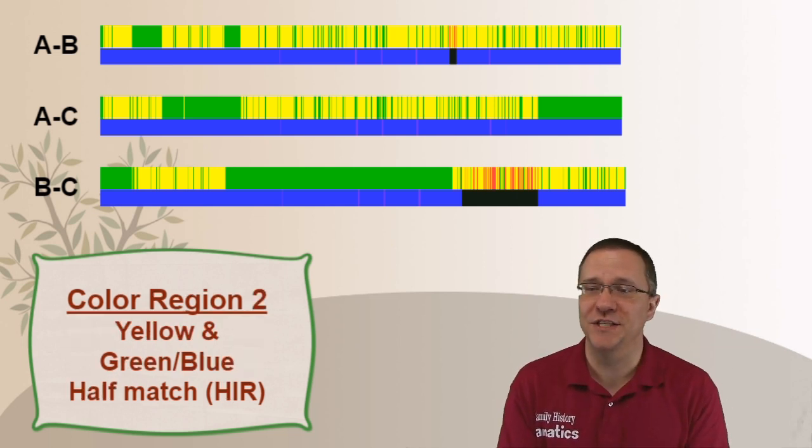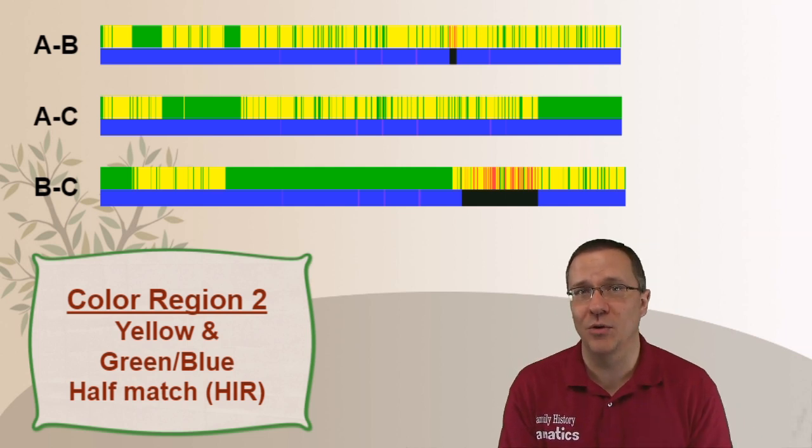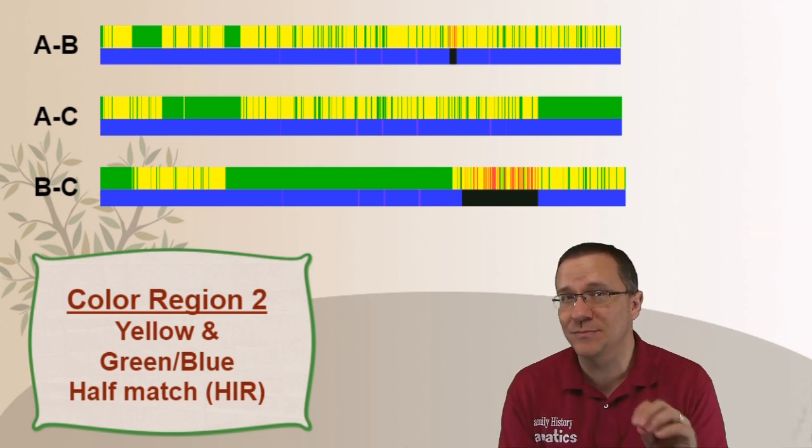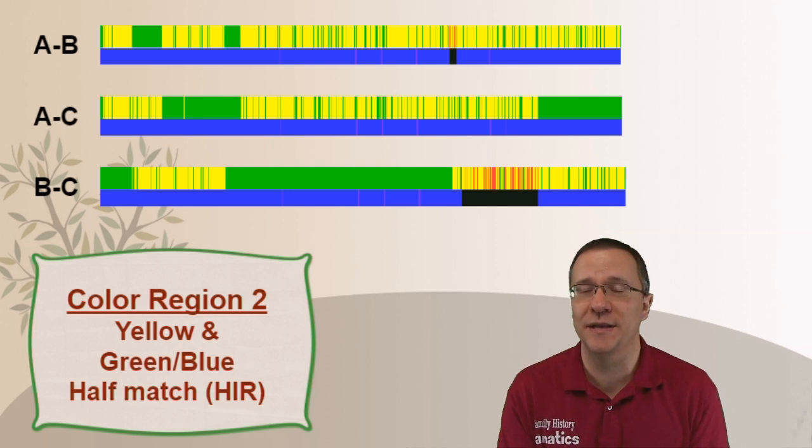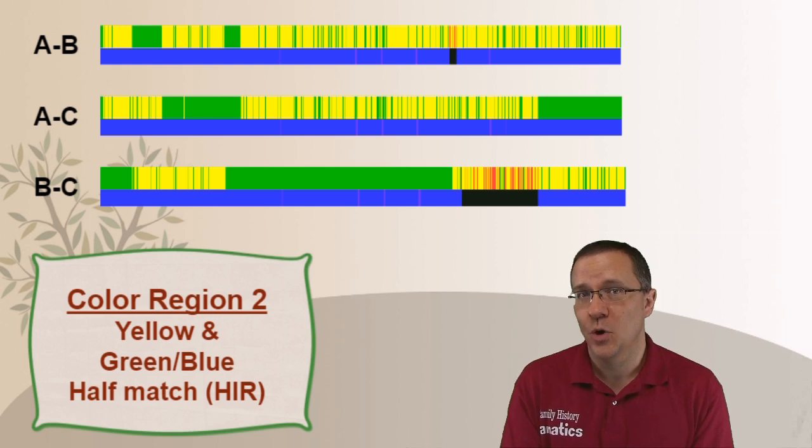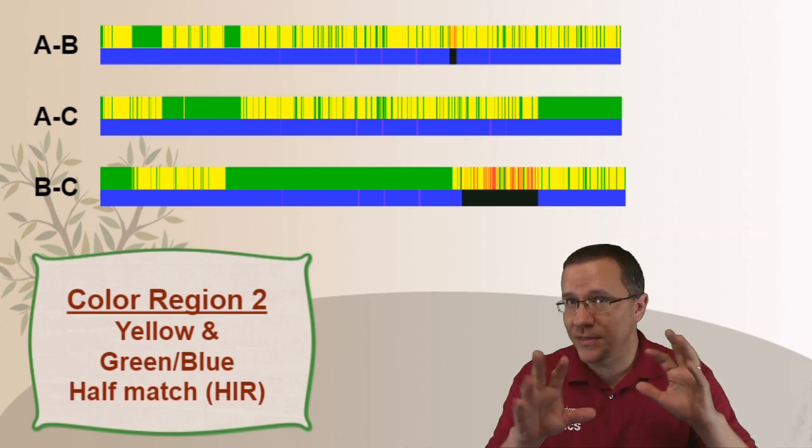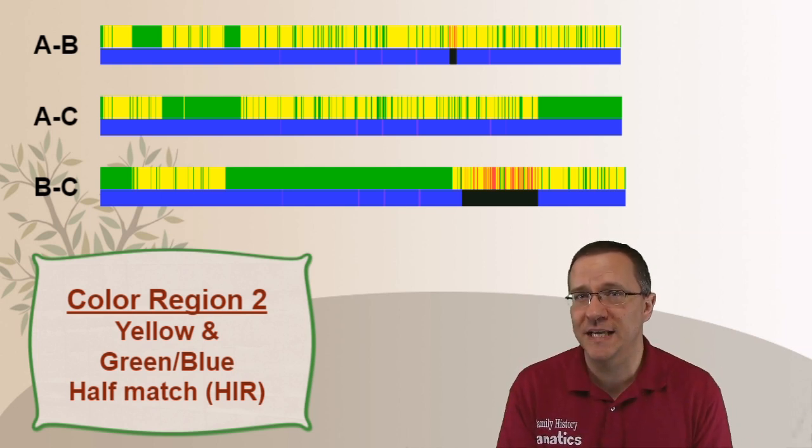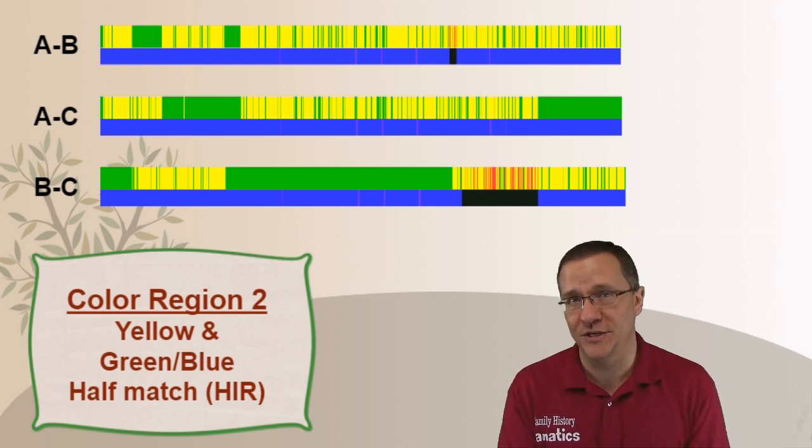The next color region is if you have yellow on top that has some green or maybe it doesn't have some green interspersed in it and you have blue on the bottom. When you have the yellow on top with some green interspersed in and blue on the bottom, that is a half match or a half identical region.